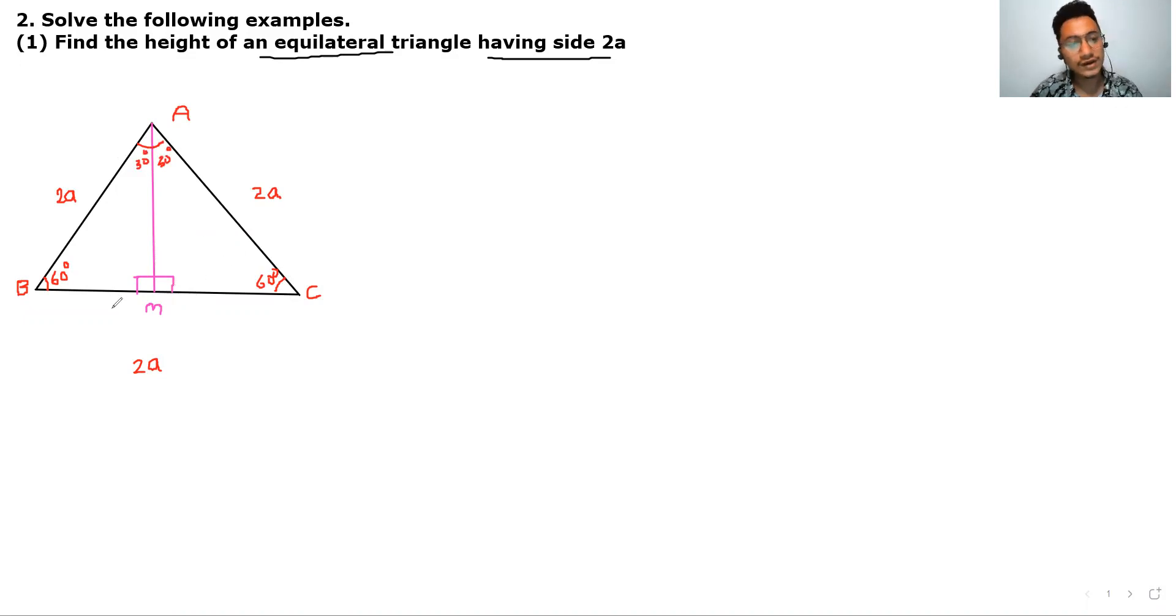Now find out AM. So 30-60-90 property apply. Opposite of 60, opposite of 60 degree is equal to root 3 upon 2 multiply with hypotenuse. The formula is: opposite side of 60 degree is equals to root 3 upon 2 multiply with hypotenuse.